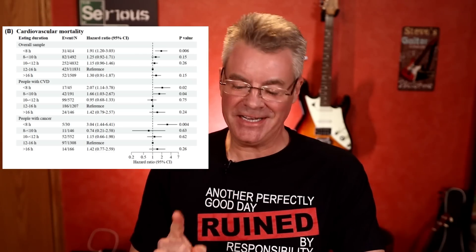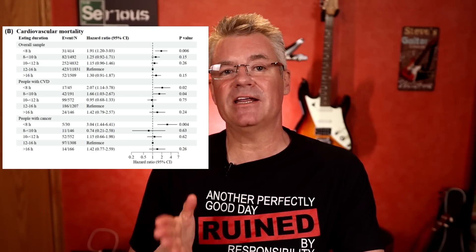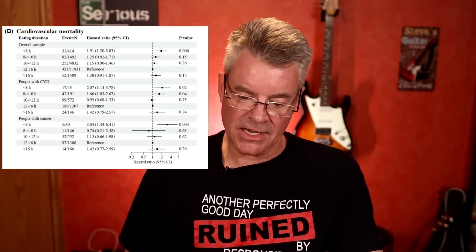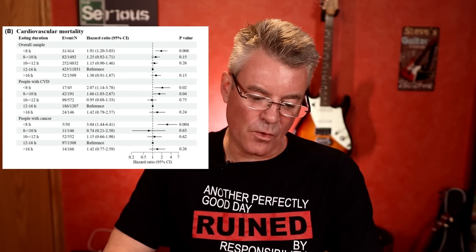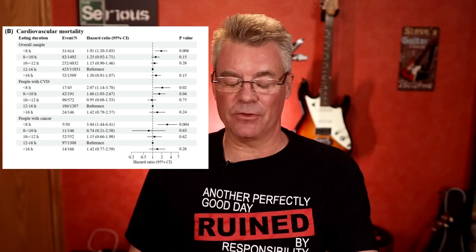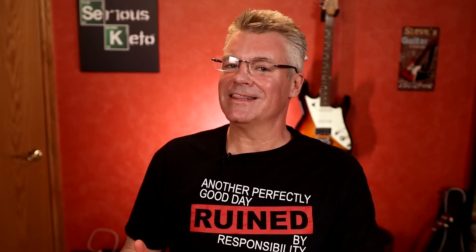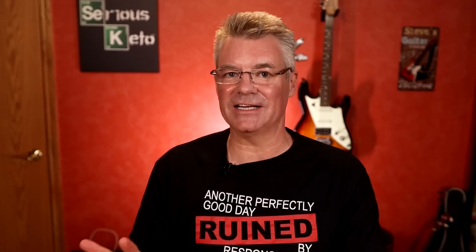An issue I have is similar to issues with statin studies — the measurements are relative rather than absolute. We have a 1.0 hazard risk for the normal eating window and a 1.91 hazard risk for less than eight hours. You could say there is a 91% greater likelihood of mortality. However, if you look at the column labeled events divided by n — cardiovascular mortalities divided by people in that bucket — the reference group had about a 3.5% likelihood of a mortality event, while the eight-hour-or-less group had about 7.5%. The difference between those two is less than four percent. Not 91%, scary — four percent. Four percent isn't going to get anybody's attention in a news article; ninety-one percent does.